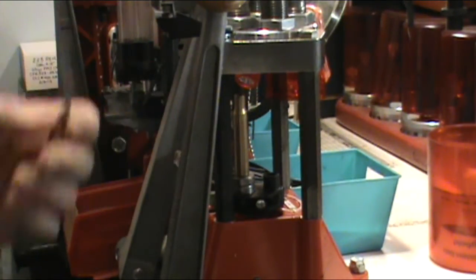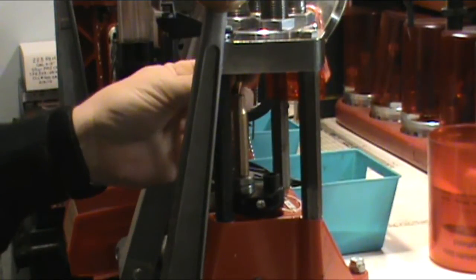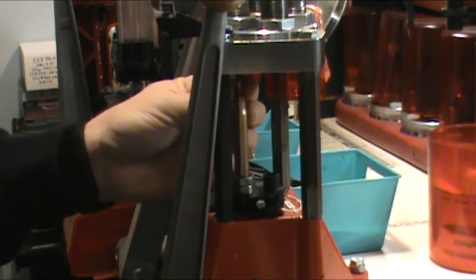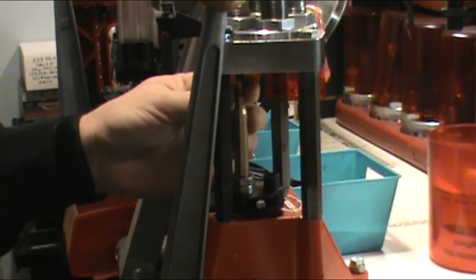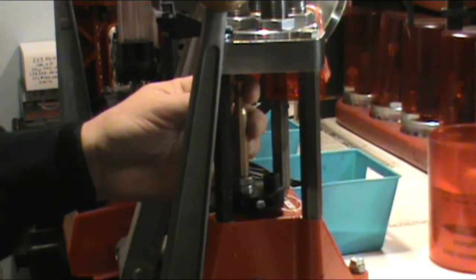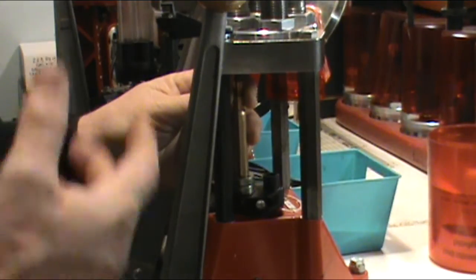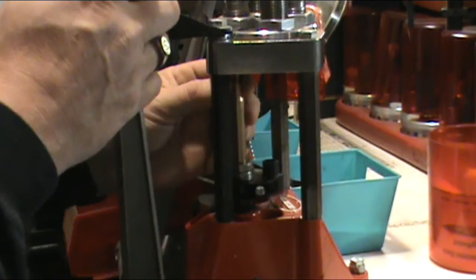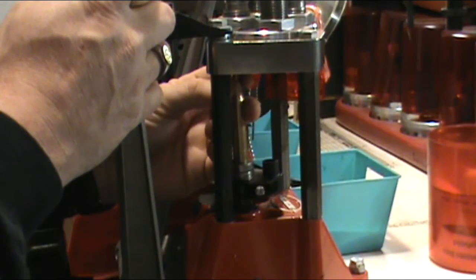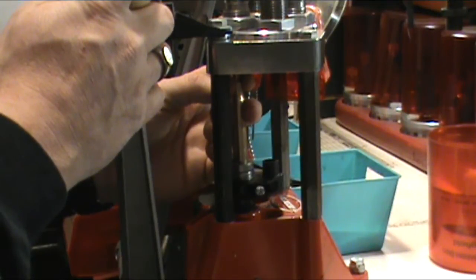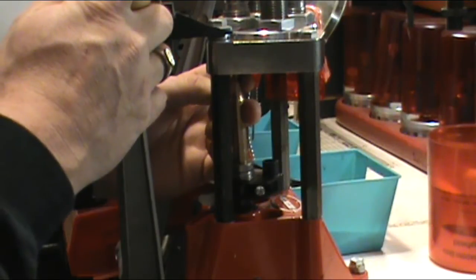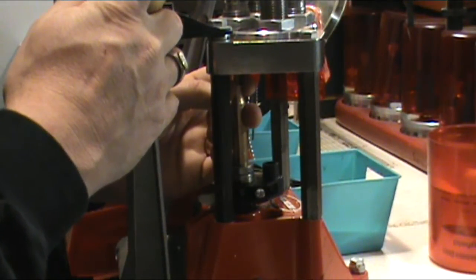When you're loading 30-06 in a four-hole turret press, you have to actually put the bullet up in the die and set it on the case mouth. That's the reason why it's probably beneficial to just load rifle anything 30-06 or that size in a single stage press. I've done it on the turret press, I don't have a problem.